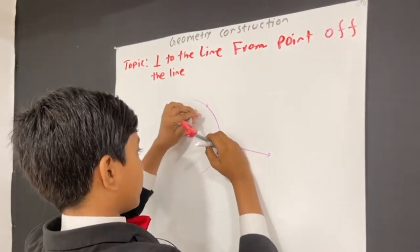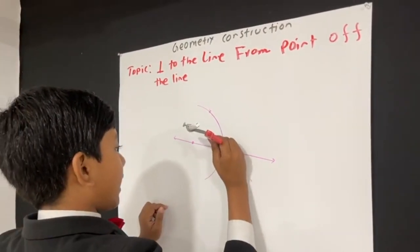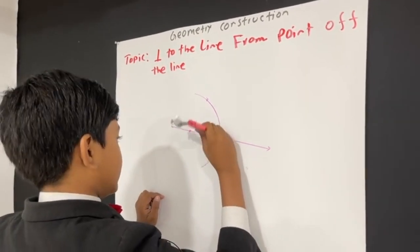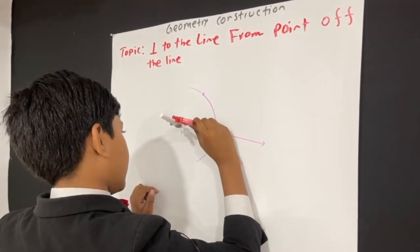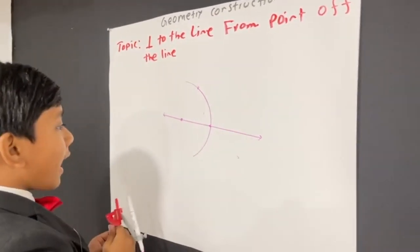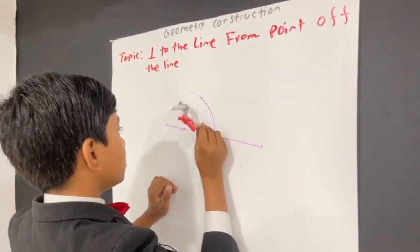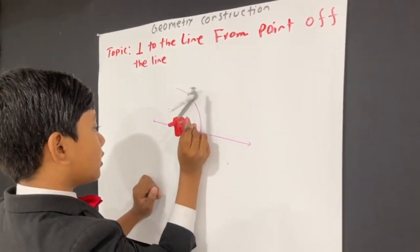So, first, I kind of want to mark this. And now, hopefully, this is still the radius that I wanted before. Yeah, it basically is.